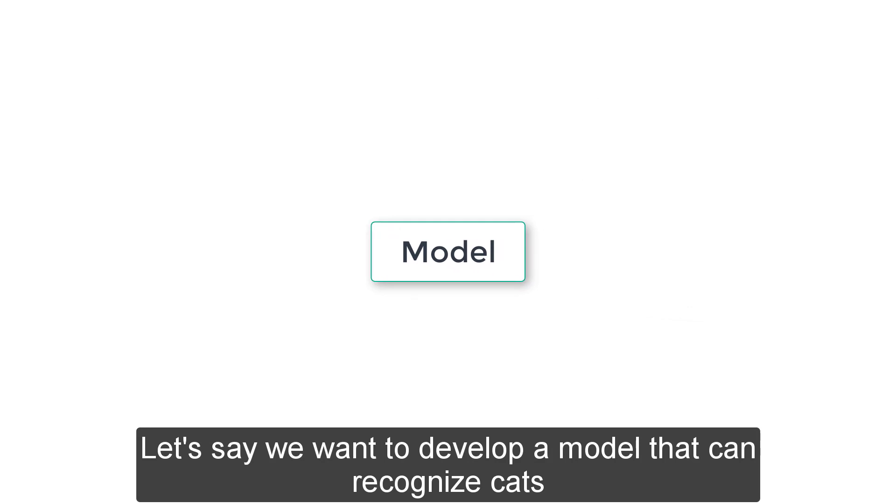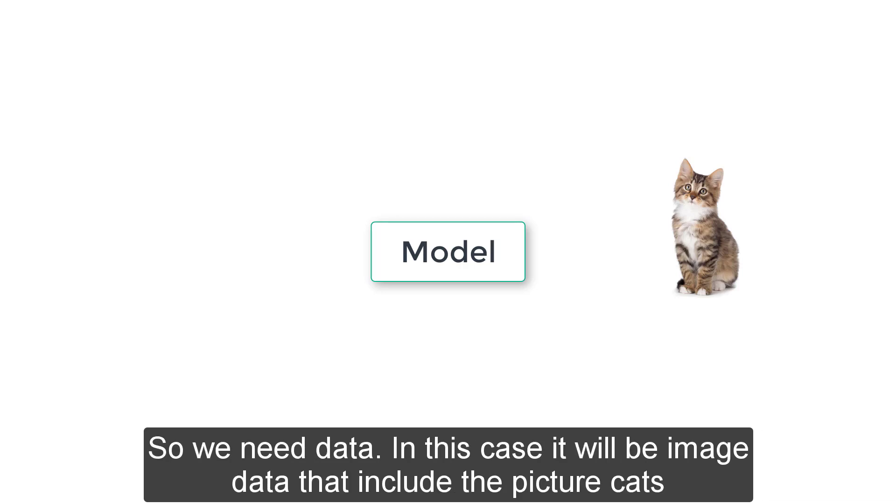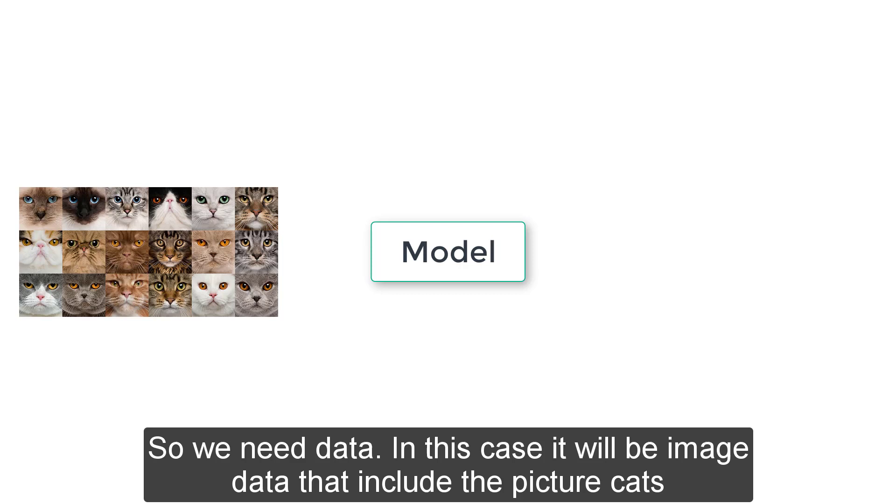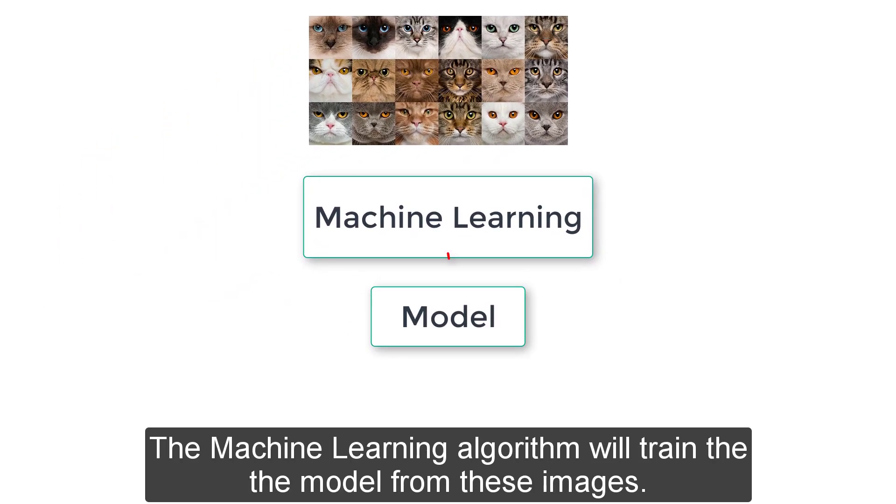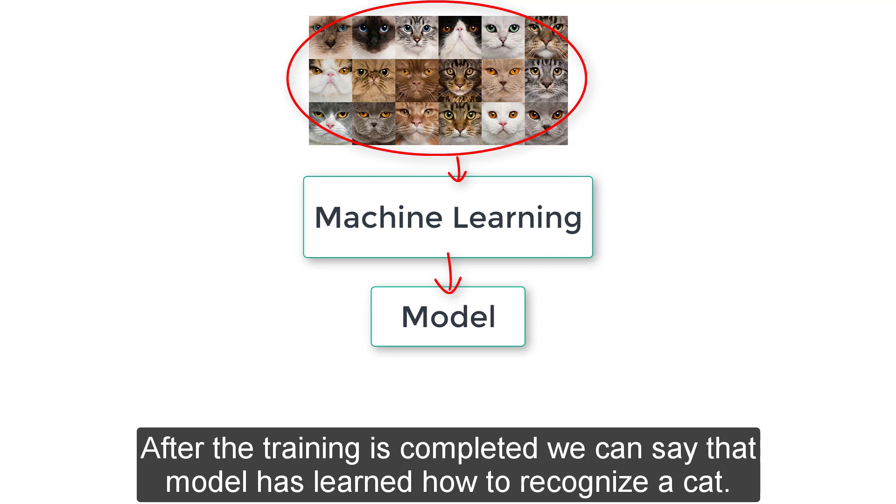Let's say we want to develop a model that can recognize cats. So we need data. In this case, it will be image data that include the picture of cats. The machine learning algorithm will train the model from these images. After the training is completed, we can say the model has learned how to recognize a cat.